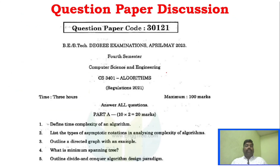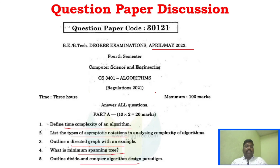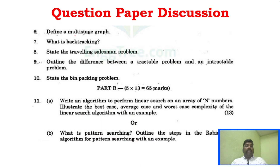Now we will see the question paper discussion for April-May 2023. The two-mark direct questions include: time complexity of an algorithm, types of asymptotic notation, directed graph, minimum spanning tree, divide and conquer design strategy, multi-stage graph, backtracking, travelling salesman problem, differentiate tractable and non-tractable problems, and bin packing problem.